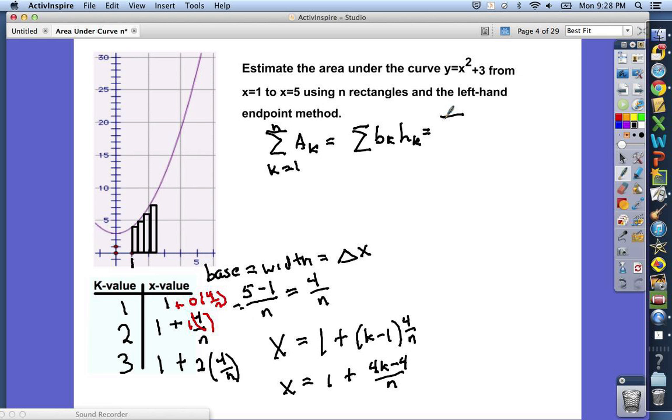And of course, we know that that means the base, or the delta x, or the width, is 4 over n. And the height is going to be found by x squared plus 3.